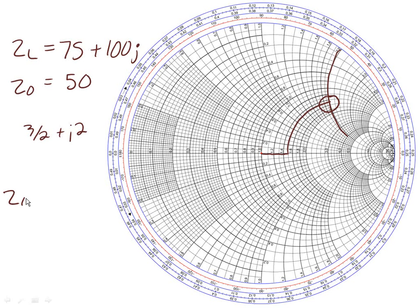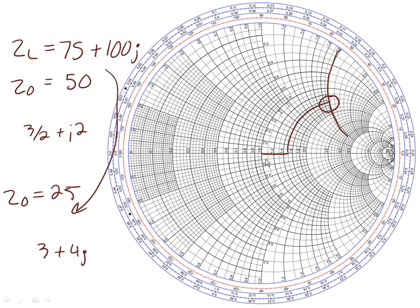Now let's say Z_0 is 25 ohms and we keep our load impedance the same — 75 plus 100j. Now we have 3 plus 4j. We'd move until we find the value 3, which is here, and then find the value 4 in the positive direction, which is here. Drawing along that line and along that line, if we change Z_0 to be 25 ohms, this point right here is the new value of the load on the Smith chart.